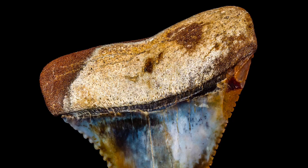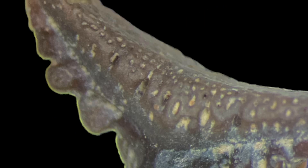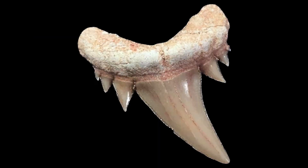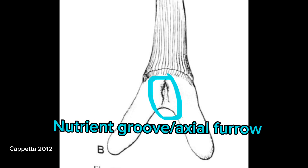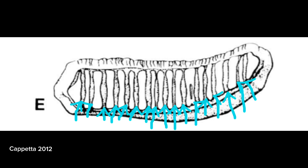Some shark species, such as the great white, have a hole in the center of the root on the tooth's lingual side. This is a vascular canal opening known as a foramen. Some other chondrichthians may have many of these openings, which are referred to in plural as foramina. Sand sharks, among others, have roots that feature a nutrient groove, also referred to as an axial furrow, which is a fold that goes down the center of the root. Nutrient grooves aren't restricted to the center of the root and can be numerous on a tooth.